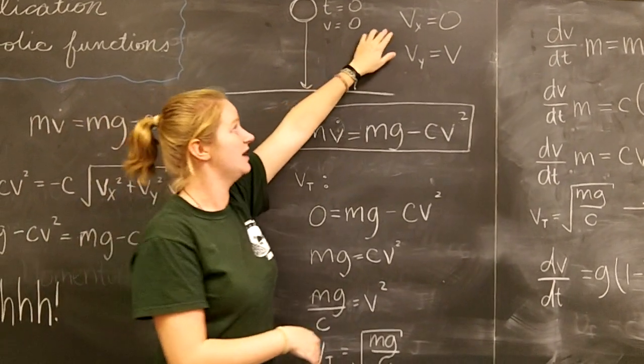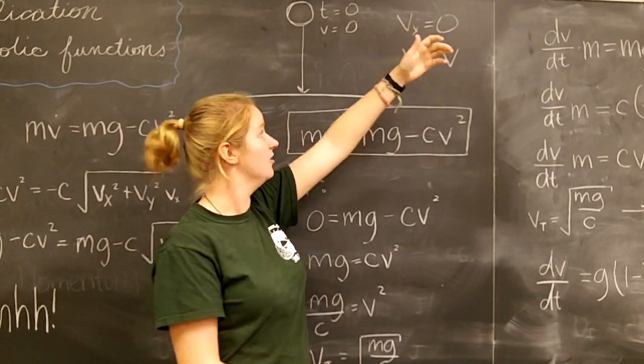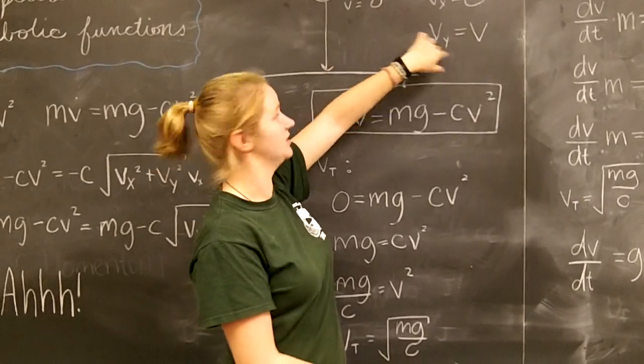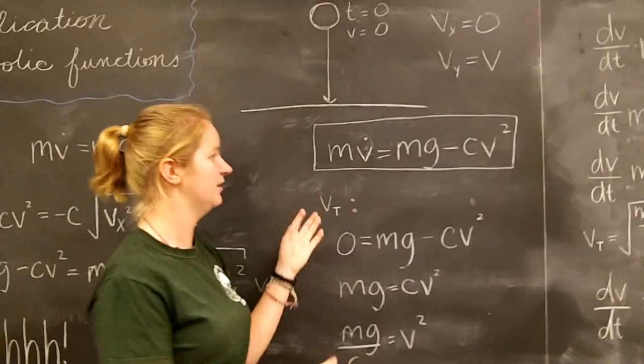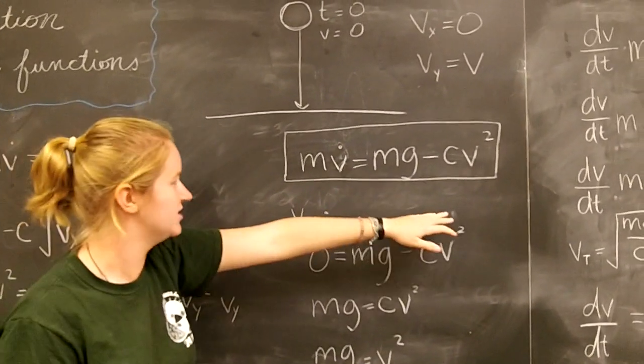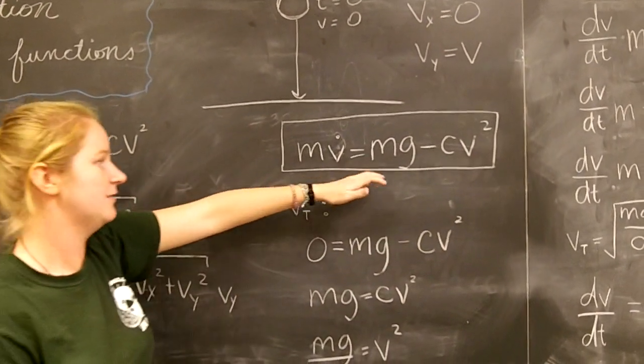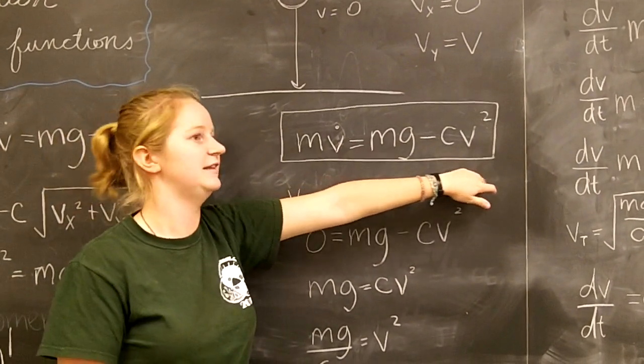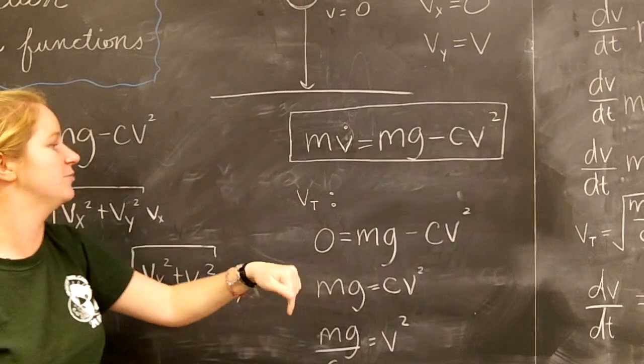And in this situation, the velocity in the x direction is just going to be zero. And the velocity in the y direction is just going to be the velocity. So we have this much simpler equation: mv dot is equal to mg minus Cv squared, again when down is the plus y direction.